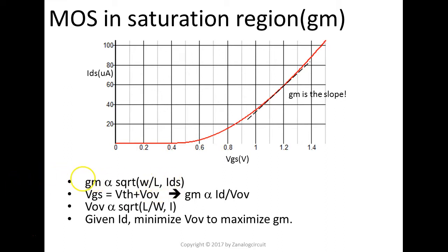But, most importantly, it's better for you to understand that the GM is proportional to square root of W over L or the square root of the IDS. What does that mean? That means, in order to increase the GM, use bigger W over L ratio or push more current into the transistors.